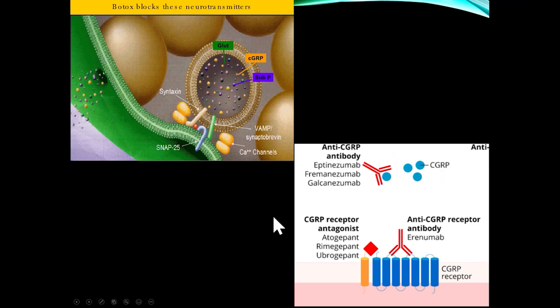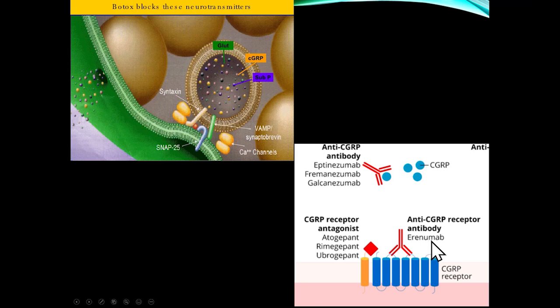Newer — probably not yet a board question — are the anti-CGRP monoclonal antibodies. Erenumab was the first, with several others now available. These are generally self-injectable medications; erenumab lasts four weeks for migraine prevention. This is a really significant breakthrough in terms of treatment.